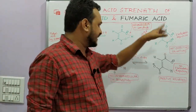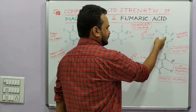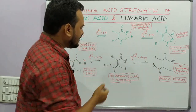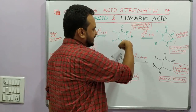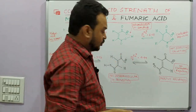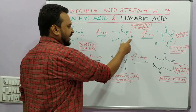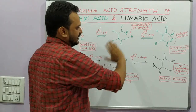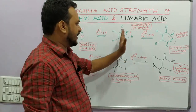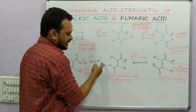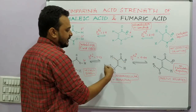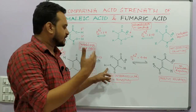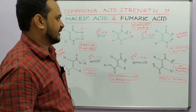Now for the second dissociation. The conjugate base from the first dissociation of maleic acid is highly stabilized by intramolecular hydrogen bonding, so it is not easy to break that carboxyl hydrogen for the second ionization — making the second dissociation difficult. But for fumaric acid, this carboxyl hydrogen is not involved in any intramolecular hydrogen bonding, so it will undergo dissociation more easily. That is factor one.